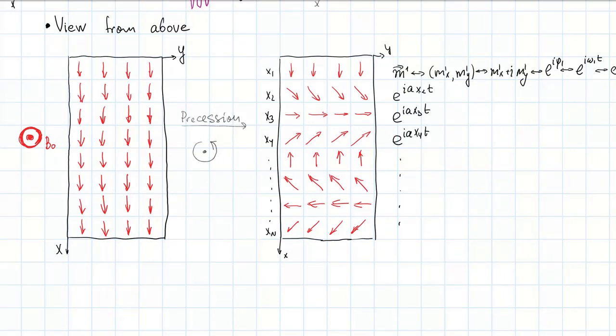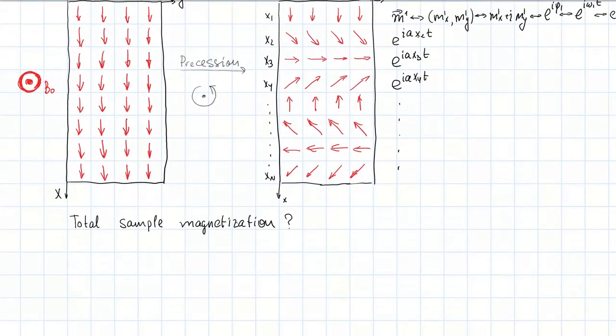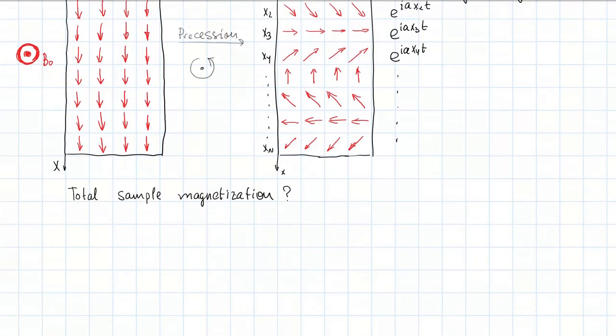Let us now determine the total magnetization of the sample and how it depends on time. For this we need to sum all spin magnetization contributions from each position in the sample. So we obtain a sum of our exponential functions, which can be substituted by an integral by introducing the sample length L. The value of this integral is given by this time dependent formula.